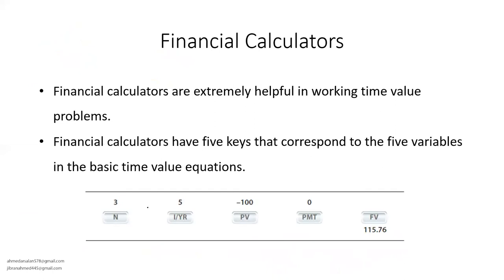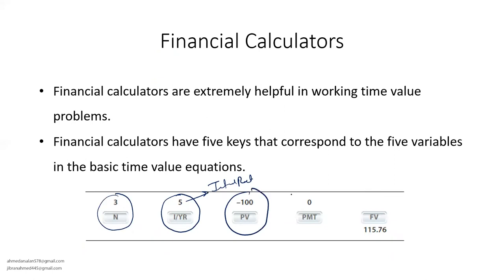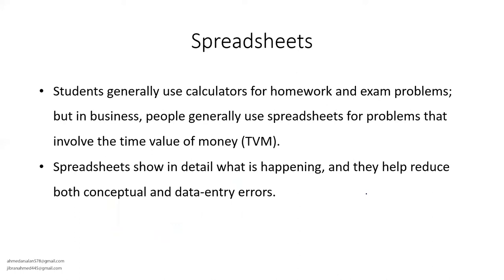The third one is the financial calculator. On a financial calculator, you put N = 3 on the N key, then I/YR = 5 for the interest rate, then the present value, and payment = 0 because there are no annuity payments here. Then you compute and this gives you the future value.